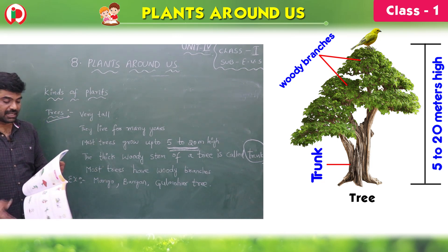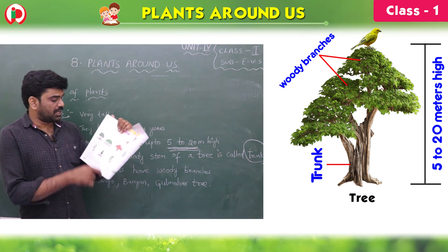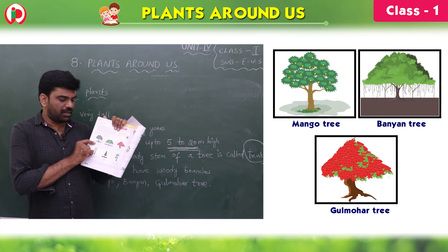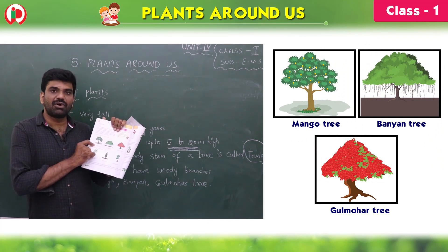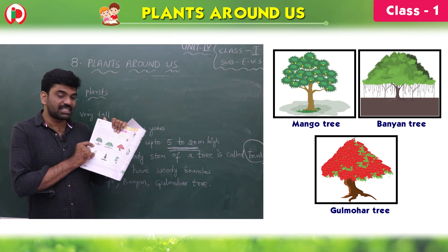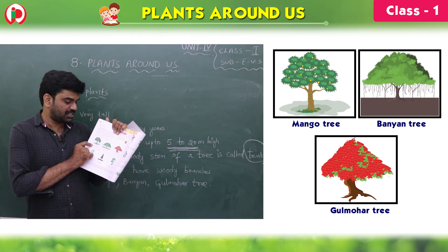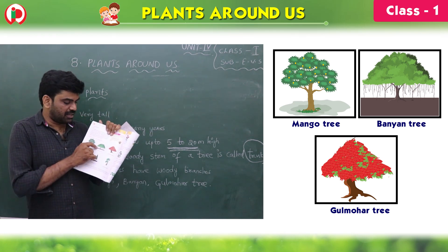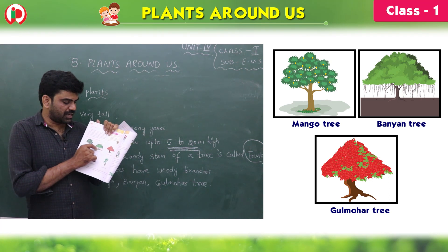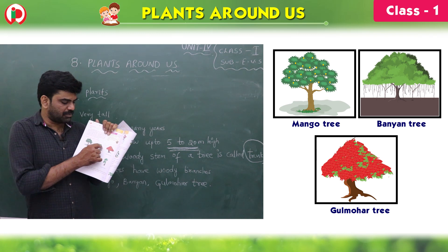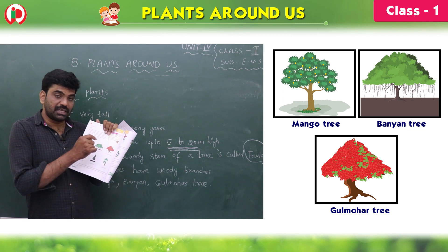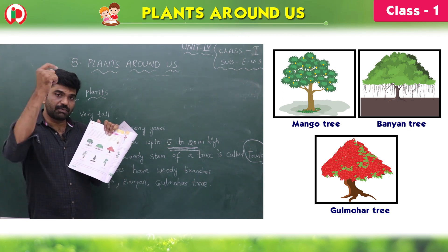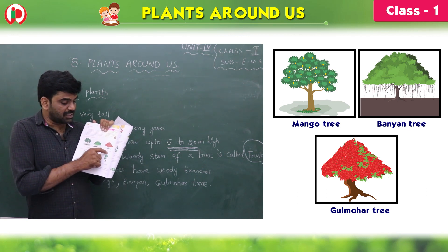The examples in the textbook are mango tree and banyan tree. Mango is sweet in taste and very delicious. The banyan tree is big in size — its roots hang down. For the banyan tree, the roots will hang. And next, this is the gulmohar tree.